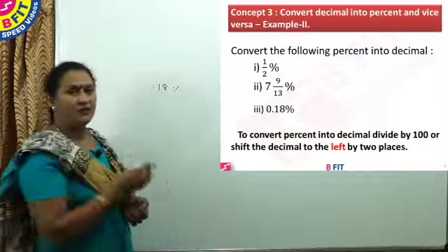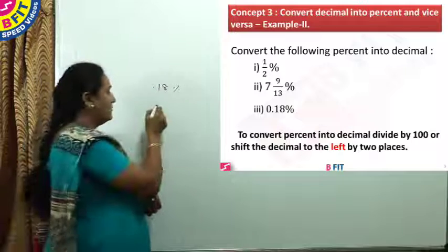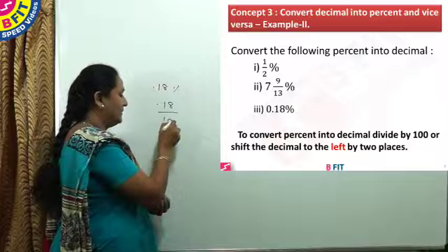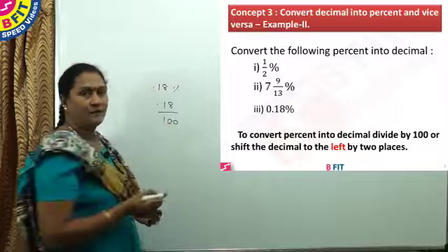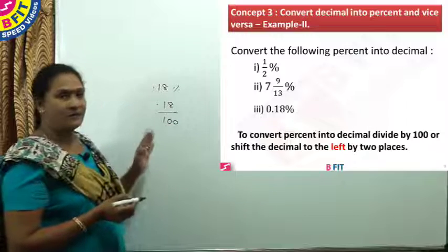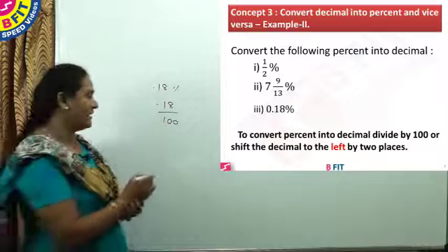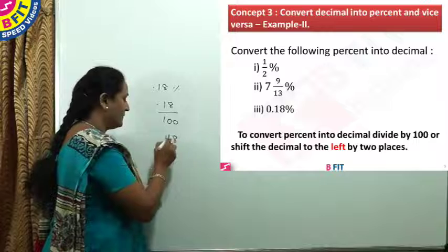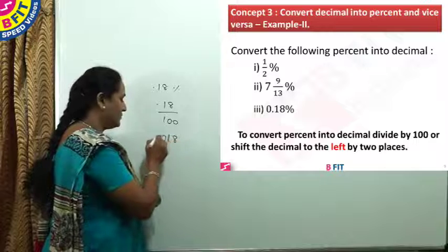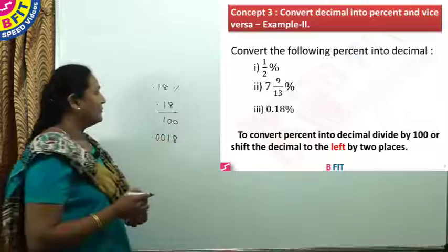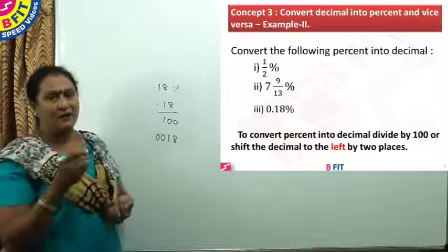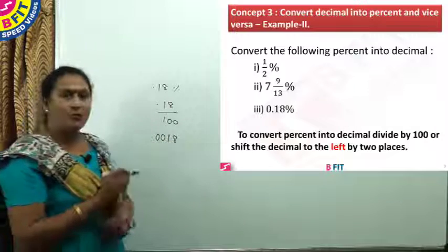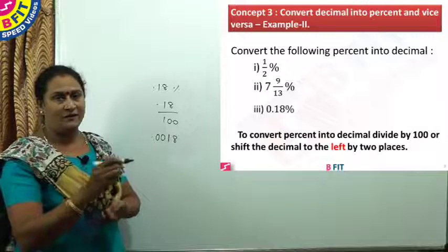And to find the value for 0.18 percent, divide it by 100, or shift the decimal two places to its left, placing two zeros. So 0.18 percent is equal to 0.0018.